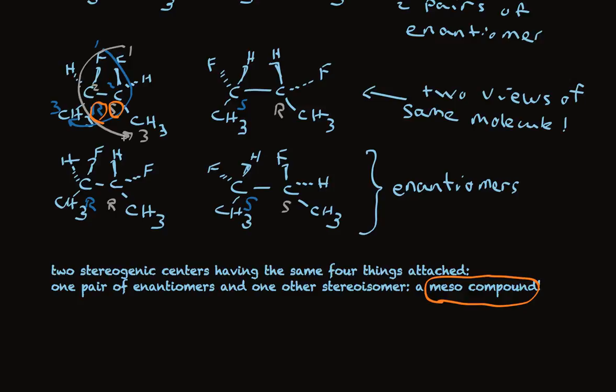And this is a general phenomenon. When you have two stereogenic centers, they have the same things attached. Rather than have two to the N equals four stereoisomers, you only have three stereoisomers. A pair of enantiomers, the RR and the SS, and a single other stereoisomer. One's stereogenic center has the S, one has the R. This is very common.